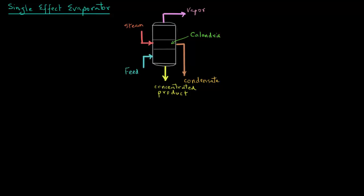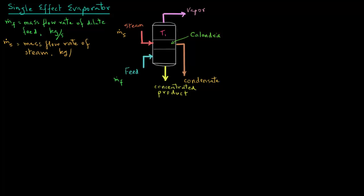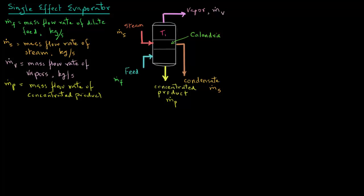Now let's conduct a mass balance. For the feed, we have M.f, which is the mass flow rate of the dilute feed in kilograms per second. We have M.s, the mass flow rate of steam, in kilograms per second. We have M.v, the mass flow rate of vapors exiting the evaporator in kilograms per second. We have M.p, the mass flow rate of concentrated product in kilograms per second.